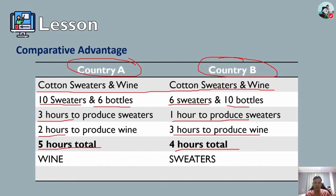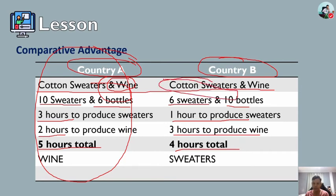These two countries realize that they could produce more by focusing on the products in which they have a comparative advantage. Country A begins to produce only wine, and Country B produces only cotton sweaters. Each country can now create a specialized output of 20 units per year and trade equal proportions of both products, so each country now has access to 20 units of both products.